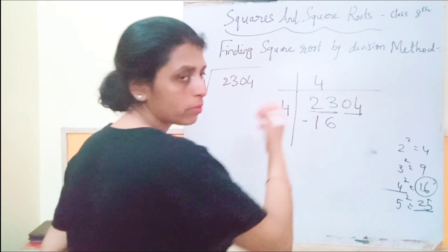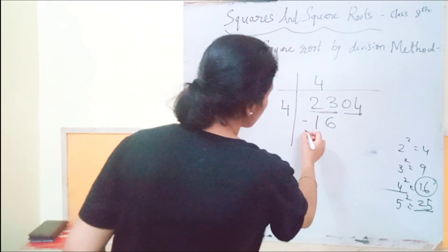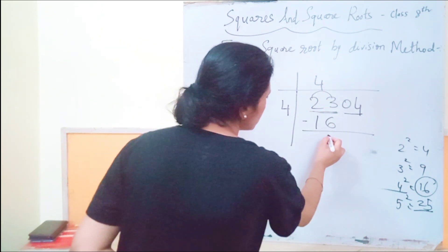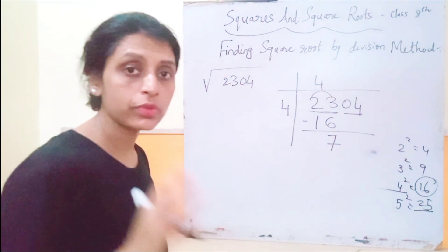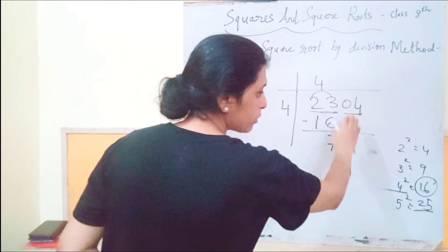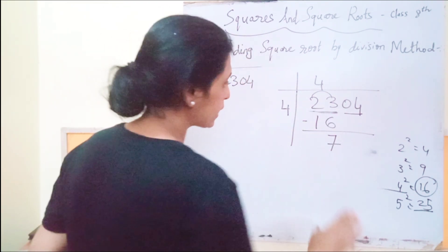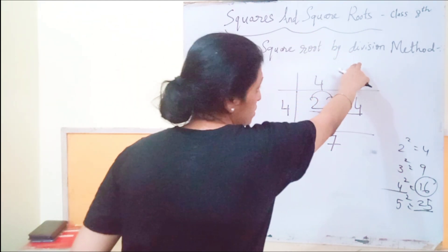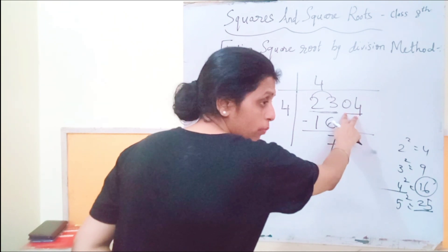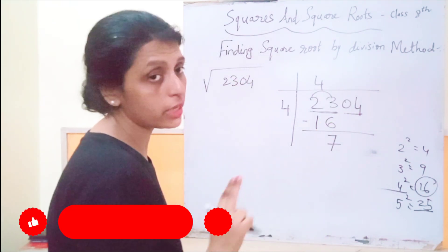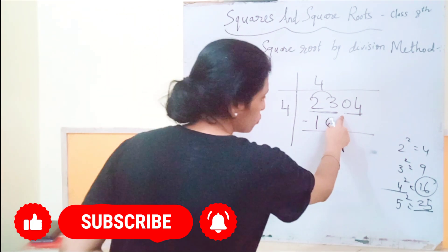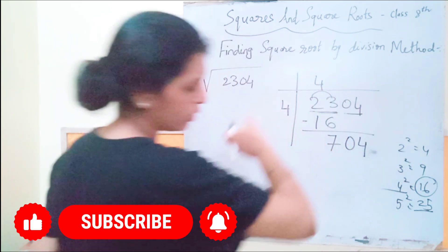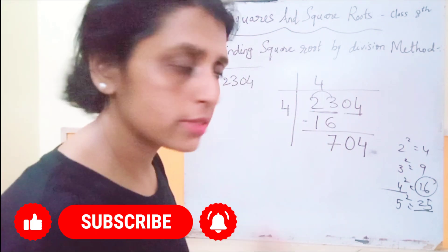Now, just like normal division we subtract and get remainder 7. But in this division method to find the square root, we bring the last paired digits down as a pair. The next pair is 04, so we bring down 04, making the new dividend 704.